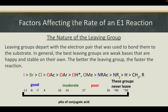The last factor is the nature of the leaving group. Leaving groups depart with the electron pair that was used to bond them to the substrate. In general, the best leaving groups are weak bases that are stable on their own — the better the leaving group, the faster the reaction. Here we can see a pKa scale of the conjugate acid: groups that are more basic make poor leaving groups, while those that are less basic make really good leaving groups. Some groups never leave. That was our presentation on the E1 elimination reaction — I hope you learned a lot, and thank you.